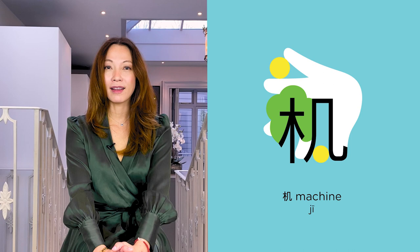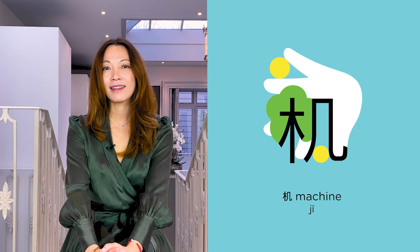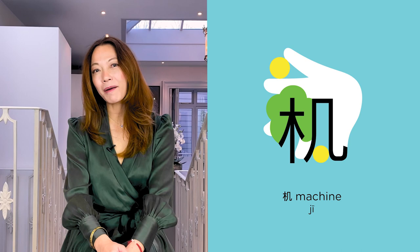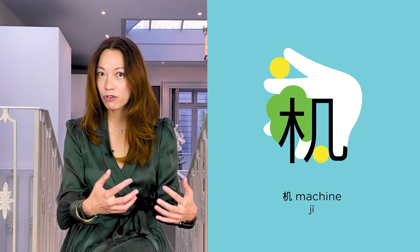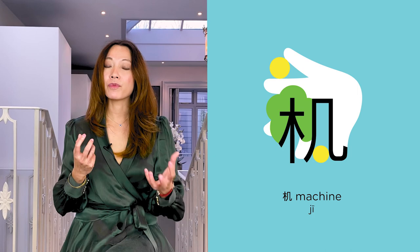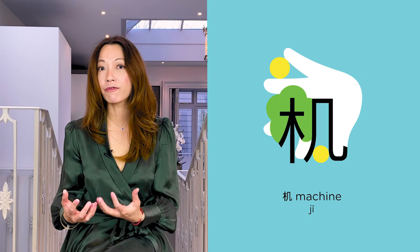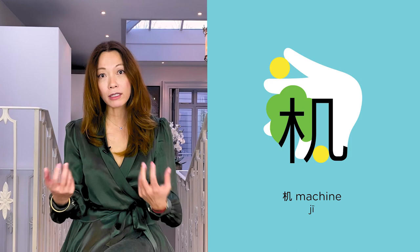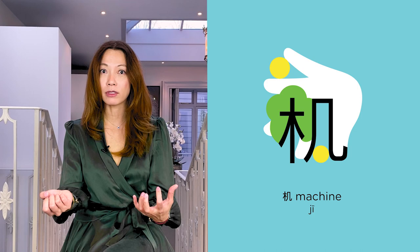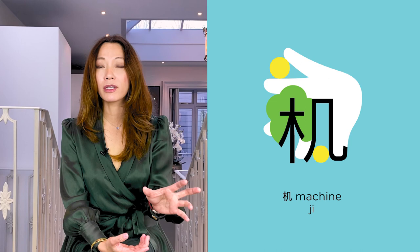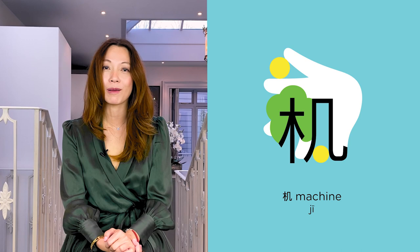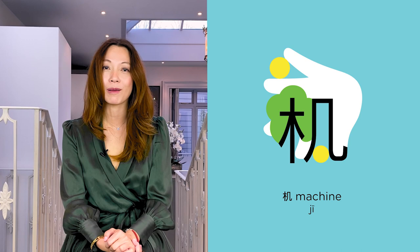Another important word to learn is the machine — 机, which is the first tone. 机 is the combination of the character for wood or tree, the wooden structure, and a little table. The wooden part describes the structure, and the little table provides the sound. It's very common in Chinese characters to combine two radicals — one provides the meaning, one provides the sound. So 机 is the combination of the wood and the little tea table. 机.